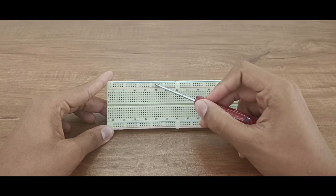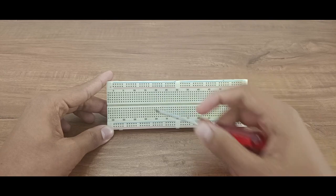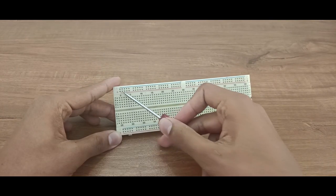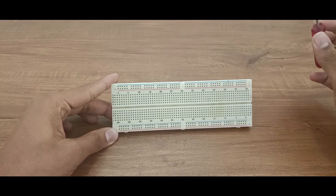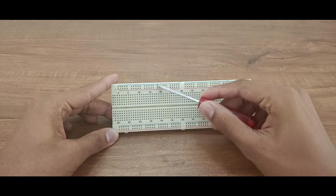We have to connect the battery positive and negative to the power rails.